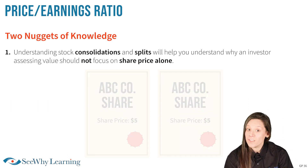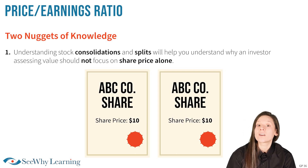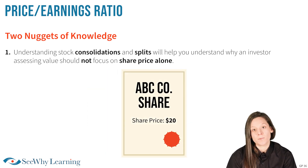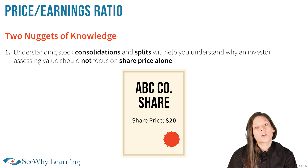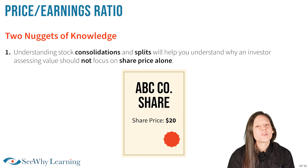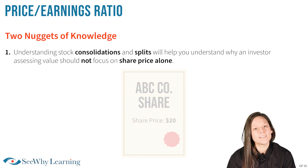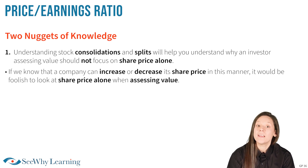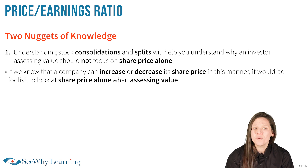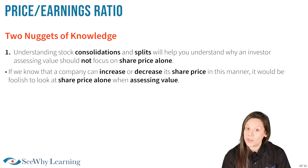On the other hand, by doing a two-to-one stock consolidation, also called a reverse stock split, it would increase the price of each share to $20. The learning point is this: if we know that a company can increase or decrease its share price in this manner, it would be foolish to look at the share price alone when assessing value.